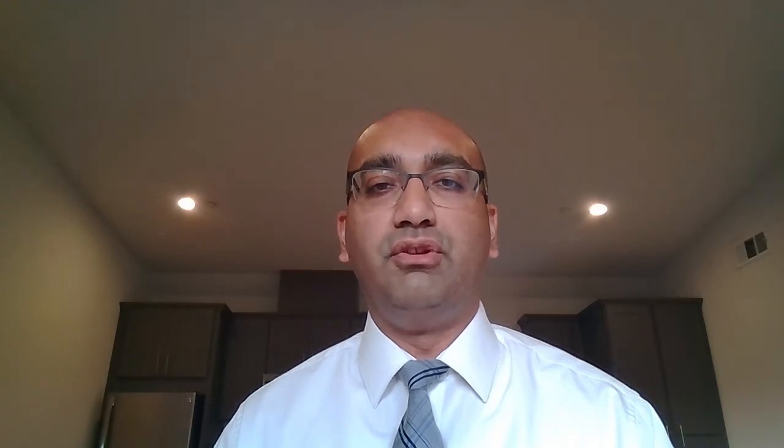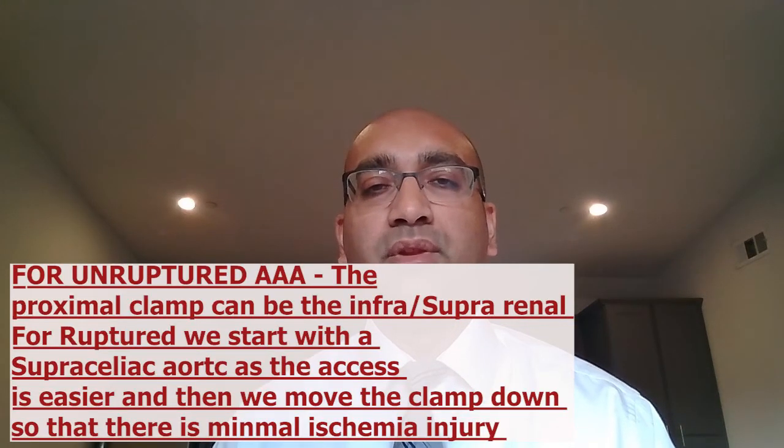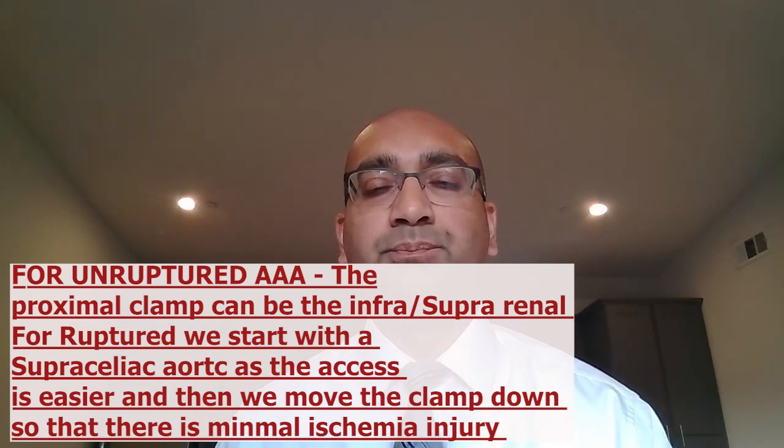The distal control would be at the level of the bilateral iliacs. Once you have the proximal and distal control, you can do the repair. Before you do the repair, it is important that you place an additional proximal control clamp just below the renal takeoff. This gives you a clamp for proximal control just below the takeoff of the renal arteries, and you can take off the supraceliac clamp. By this way, you are getting blood flow to the other structures and the kidneys, and then you can continue with the operation.